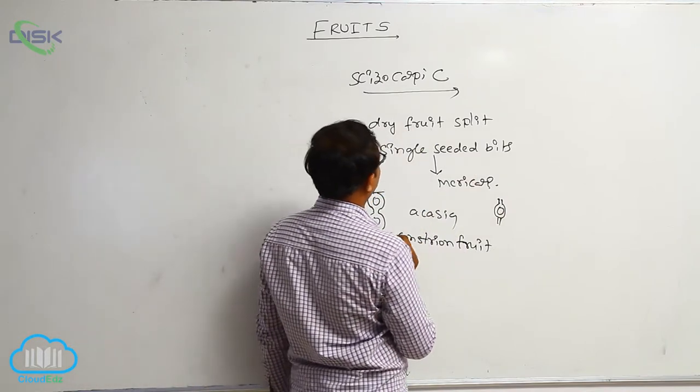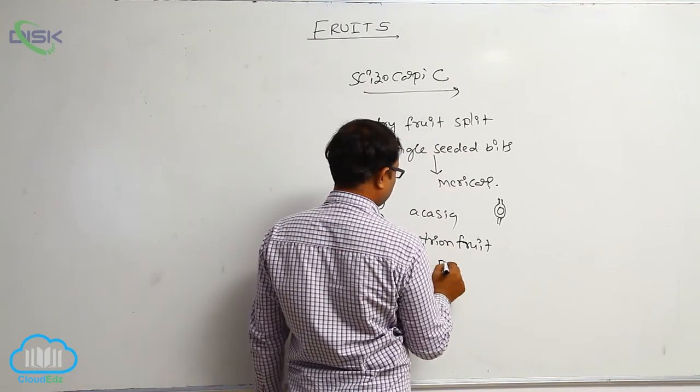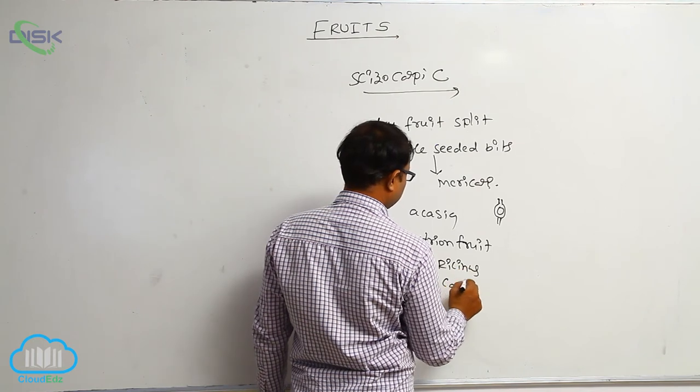This schizocarpic fruits are example, acacia. Second one is the ricinus - ricinus means castor.